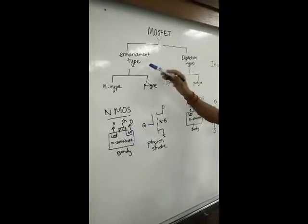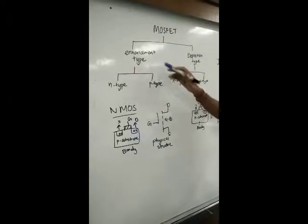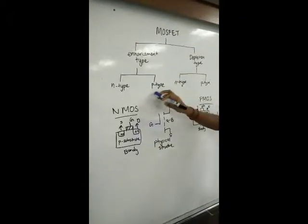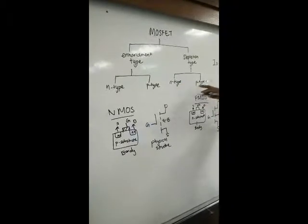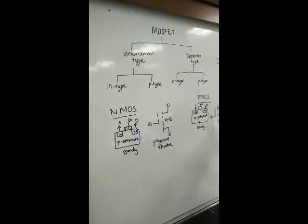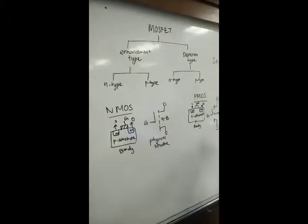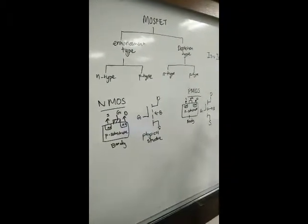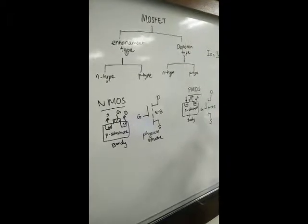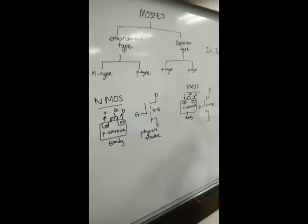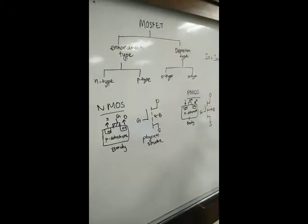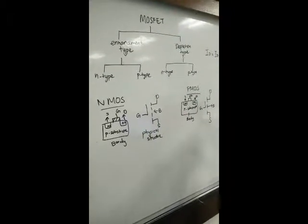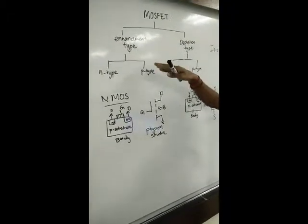MOSFET has two types: enhancement type and depletion type. In enhancement type we have N-type and P-type. In depletion type we have N-type and P-type. The difference is in depletion type, the channel will exist initially. When you apply voltage, the channel will be slowly removed and become zero.